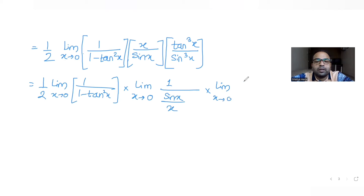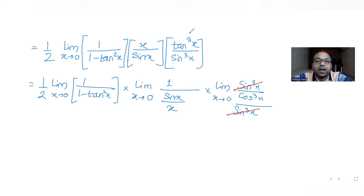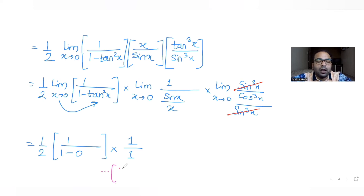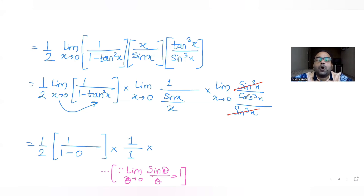I can write tan³(x) as sin³(x)/cos³(x), since tan(θ) equals sin(θ)/cos(θ). The sin³(x) in the numerator then cancels with the sin³(x) remaining in the denominator. Now applying limits: I use the standard result that limit θ→0 of sin(θ)/θ equals 1. So limit x→0 of x/sin(x) equals 1. The last part is limit x→0 of 1/cos³(x).